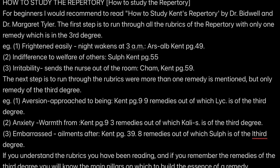The next step is to run through rubrics where more than one remedy is mentioned, but only the remedy of the third degree. For example: number one, 'Aversion, approach to being' - Kent page 9, nine remedies, of which Lycopodium is third degree. Number two, 'Anxiety, vomiting from' - Kent page 9, three remedies, of which Kali Sulph is third degree. Number three, 'Embarrassed, ailments after' - Kent page 39, eight remedies, of which Sulfur is third degree.